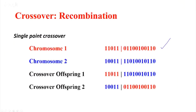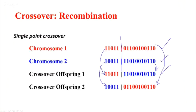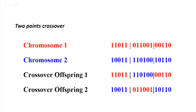In one-point crossover, at one particular point we split the chromosome. For the first child, we take the first part from the mother and the second part from the father. For the second child, we take the first part from the father and the other half from the mother. So the second child will carry more features of the mother. In two-point crossover, we cross at two different points — the outer two parts come from the mother and the inner part from the father, and vice versa for the other child.